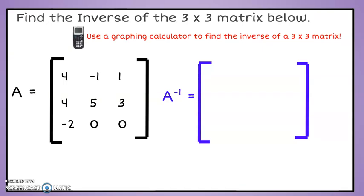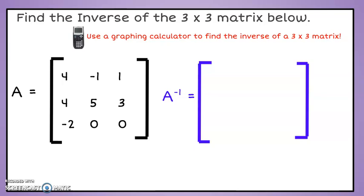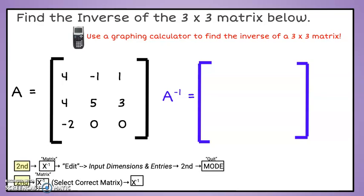To find the inverse of a larger matrix like a 3 by 3, we will use technology, a TI84 calculator. Be sure to check the resources listed for how you can access one of these for free. This is the sequence of steps we will follow to find the inverse of A. They are also provided on your capture sheet.